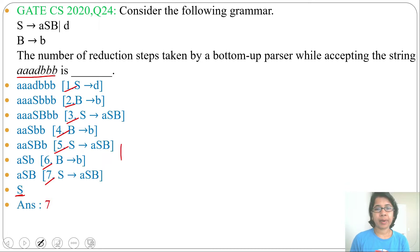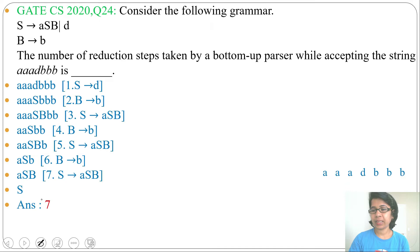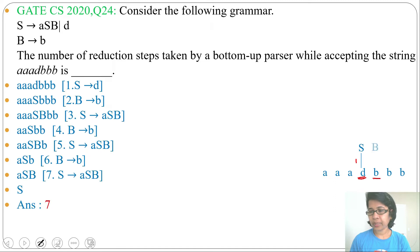Another way is the parse tree. You can consider the bottom of the parse tree for checking reductions. The string given is AADBBB. Now this D can be reduced to S — reduction number 1. Then this B can be reduced to B — reduction number 2. Then ASB can be reduced to S — reduction number 3.